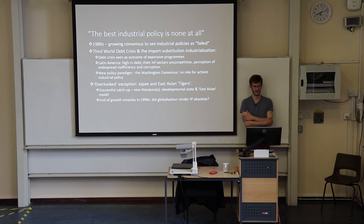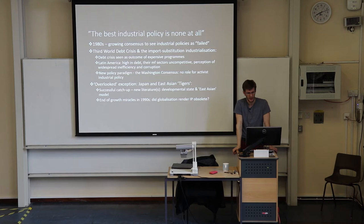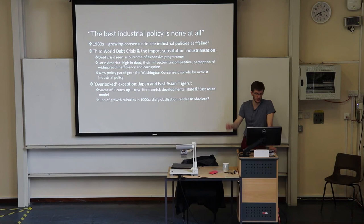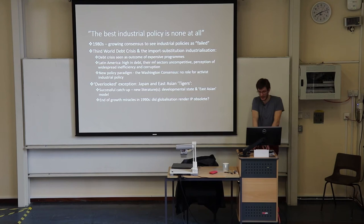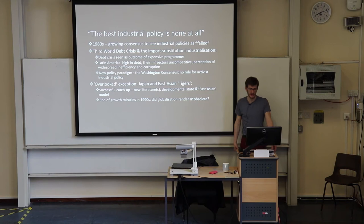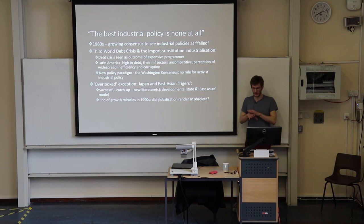There was a bit of a reversal in that consensus when people started to look at Japan and the East Asian tigers, which successfully industrialized and achieved rich-country status during that time — interestingly without much input from development economists who were very active in Latin America and Africa. This produced a new literature on the developmental state and East Asian model of development. But East Asia also gave up on industrial policy in the 1990s, and people started to say that we had arrived at the age of globalization, marking the end of industrial policy.